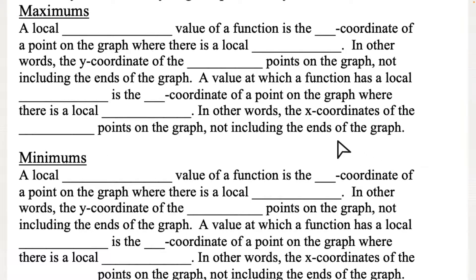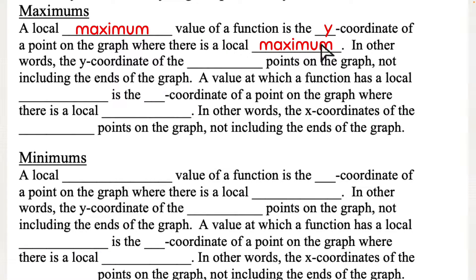A local maximum value of a function is the y-coordinate of a point on the graph where there is a local maximum. In other words, the y-coordinate of the highest points on the graph, not including the ends of the graph. So we're looking at what's the highest point on the graph — that's a local maximum.